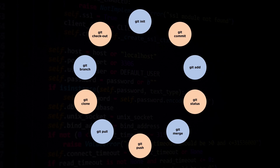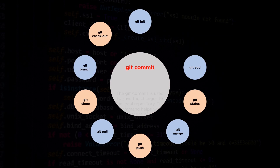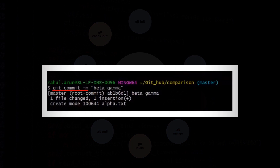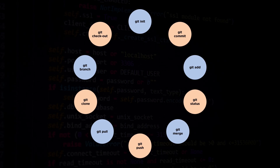The second command is the git commit command. The git commit command is used to save changes to the local repository. The command helps you keep a record of all the changes made. The changes that are committed are the ones that are added to the staging area, so it depends on us which file we want to commit. The command used before git commit is the git add command.